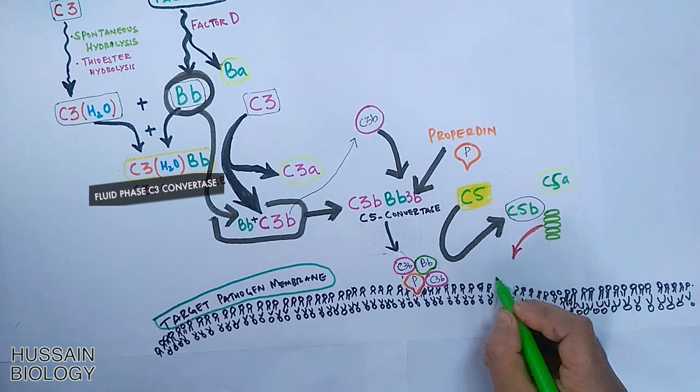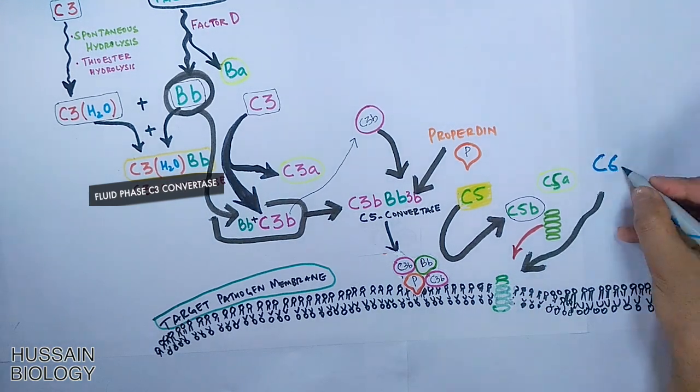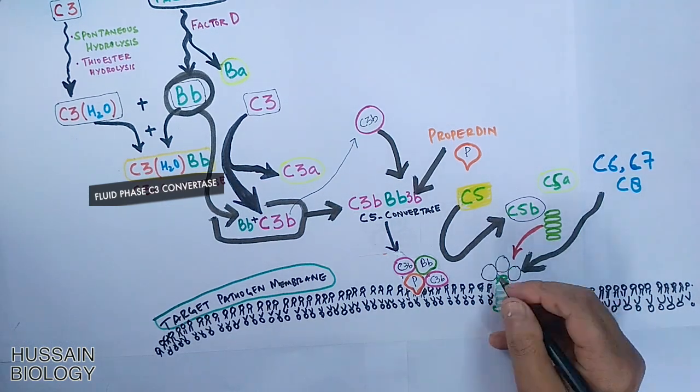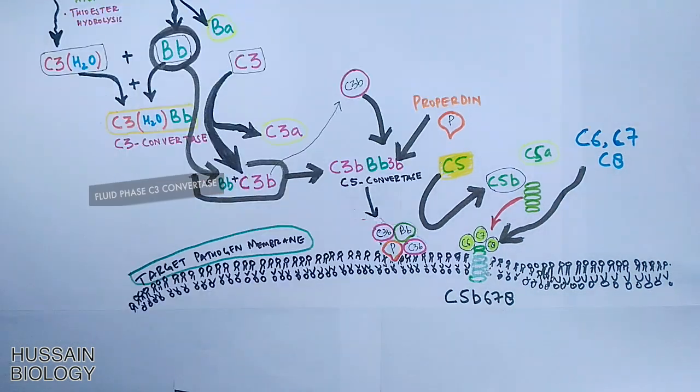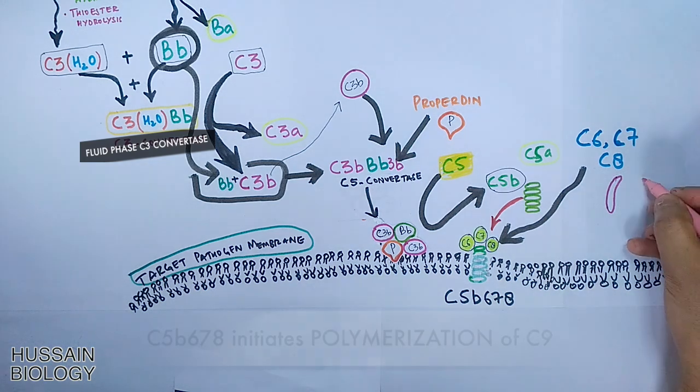And also recruits extra three complement proteins: that's C6, C7, and C8. And in the pathogen membrane we have now C5b678 complex, and this C5b678 complex has the property to polymerize the C9 molecules into the pathogen membrane.